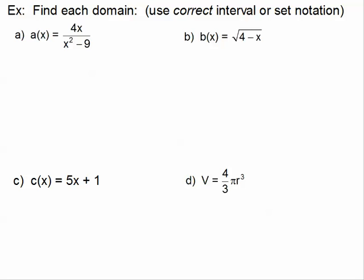Looking at a(x) — it has a denominator, so the denominator cannot be zero. You might already say x can't be three, but there's still another number x cannot be. If you have trouble finding what makes the denominator zero, set the denominator equal to zero and solve. It's quadratic, so there are two values. This is a difference of two squares: (x+3)(x-3) = 0, giving x = ±3. These are the two numbers that must be restricted from our domain.